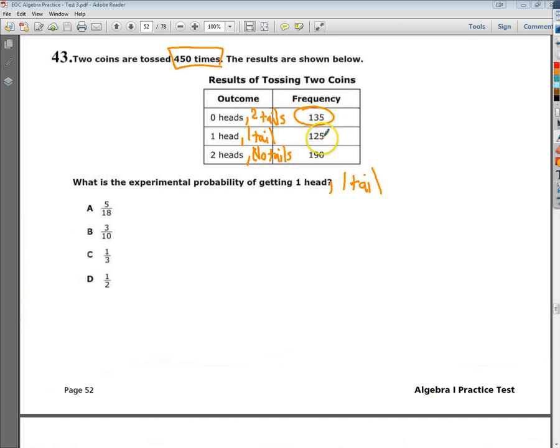So that happened 125 times. So I'm going to use that as the top of my ratio. On the bottom, I want to put the total number of trials.